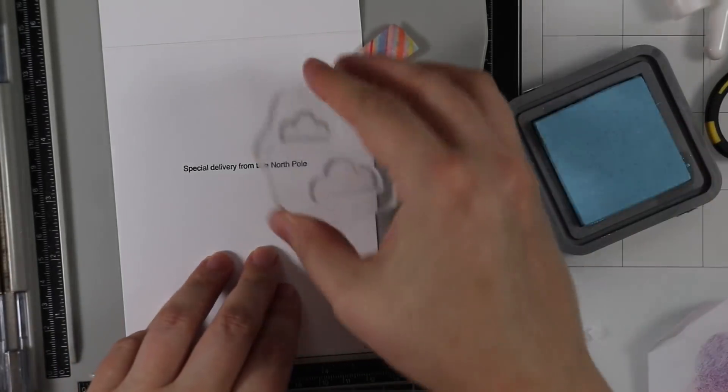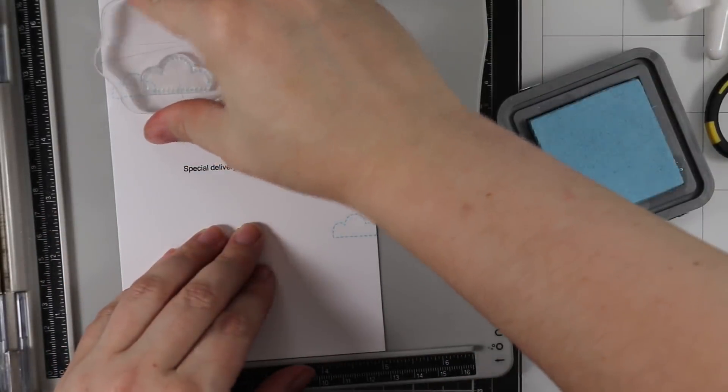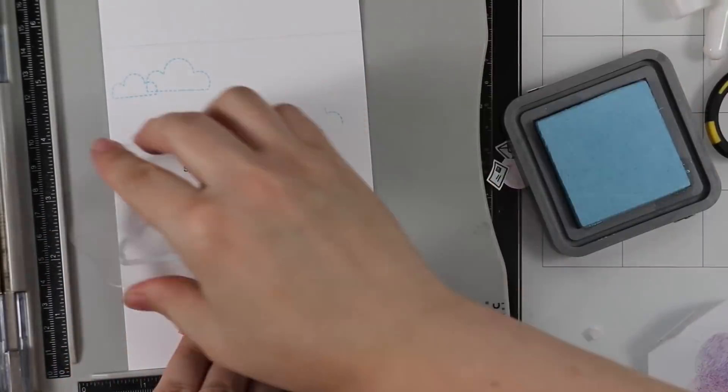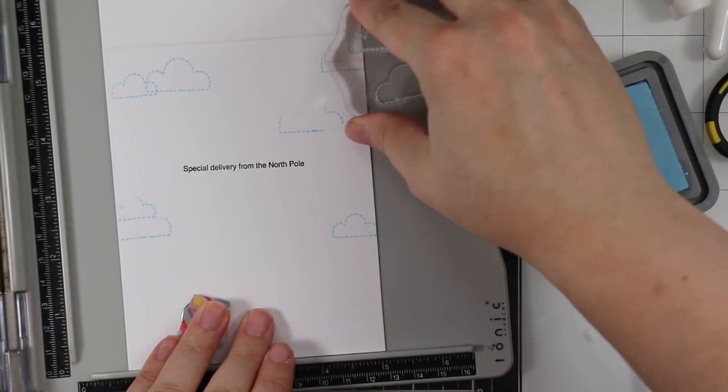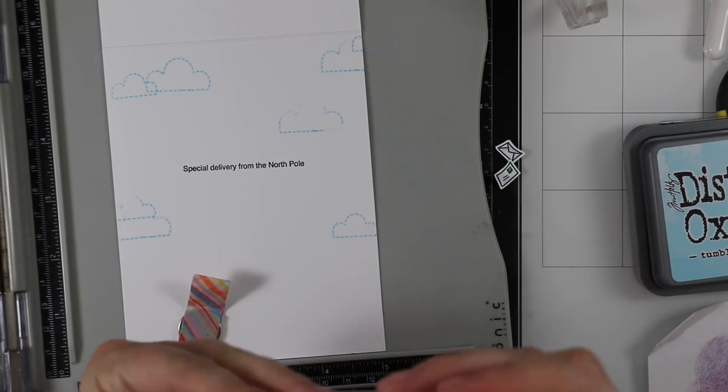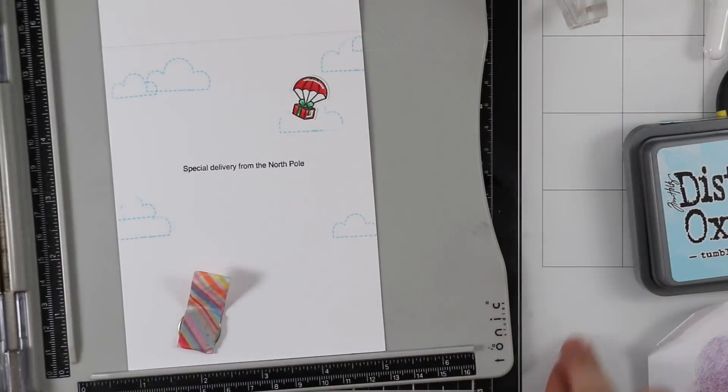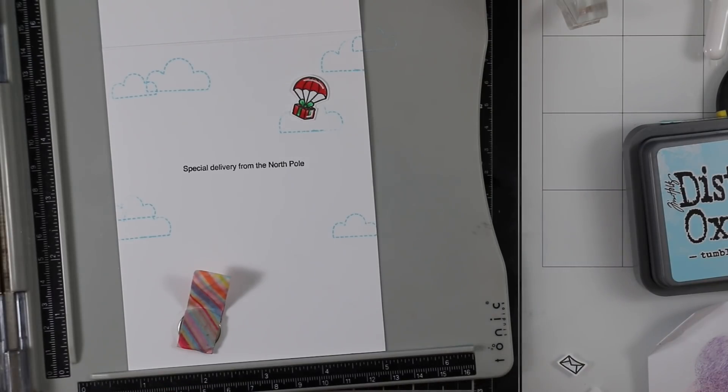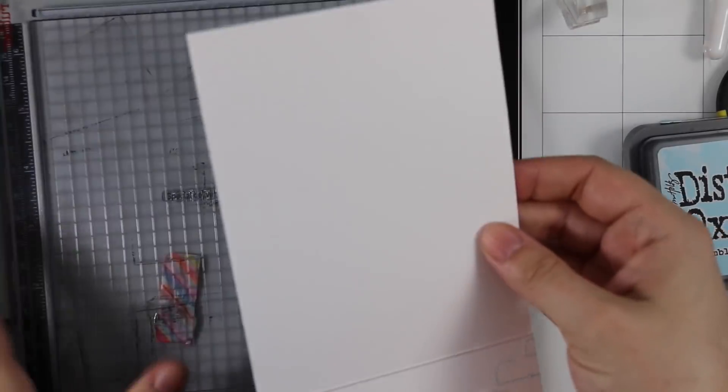I'm going to ink them up with Tumbled Glass Distress Oxide ink. This is like the perfect color for these, everything's coming together. I stamped them—a couple I didn't ink up very well. This is why I keep extra little images colored, just glue them on top. I glued the little gift with the parachute and a couple envelopes there onto the inside of the card to really finish off this cute little scene.